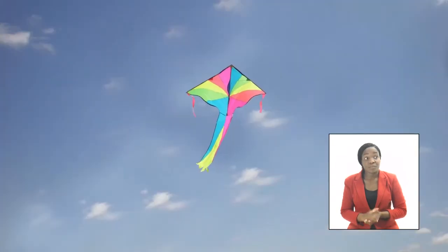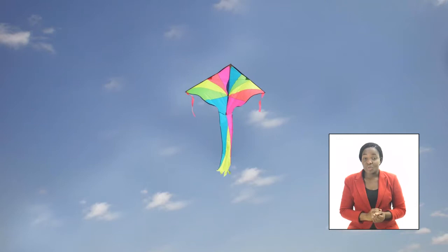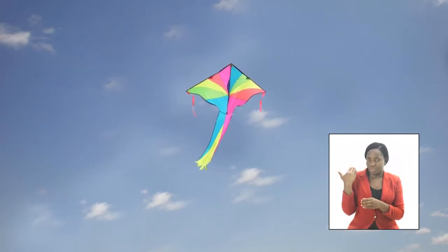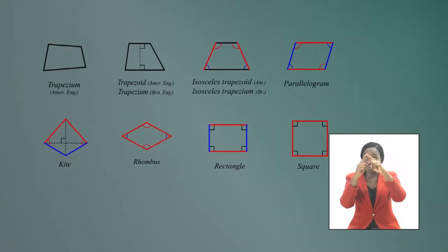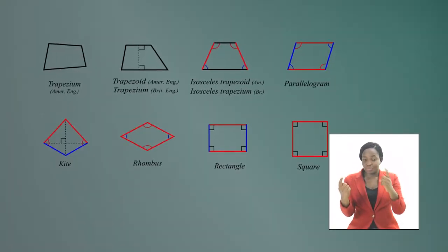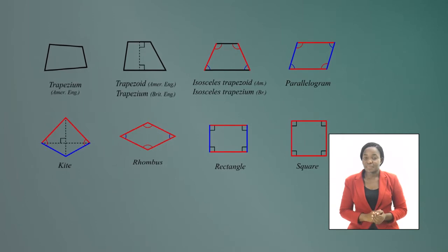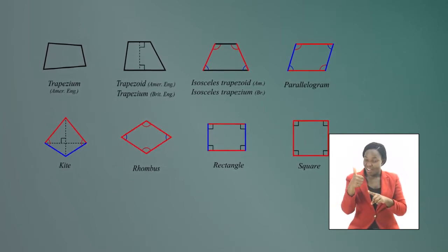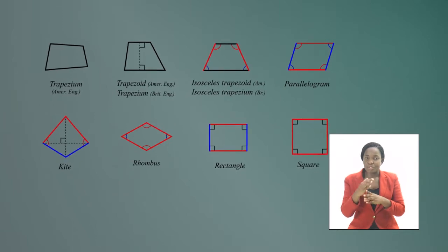Viewers, in geometry, a kite is a quadrilateral. We saw in our previous lesson that this means it has four sides and four vertices, or corners. However, a kite is totally different from the other quadrilaterals because it does not have any parallel sides.